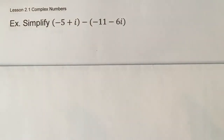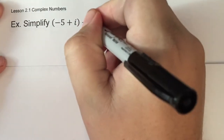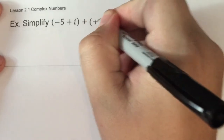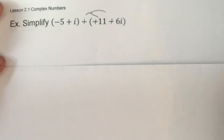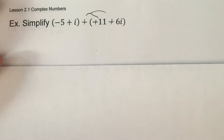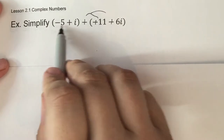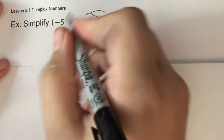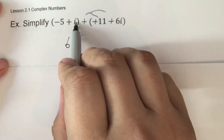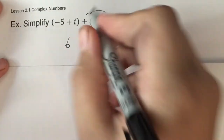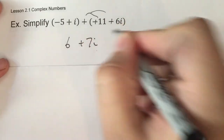If we subtract them, same idea — but first distribute the negative into both terms, so negative 5 and positive 11 give 6, and positive i and positive 6i give plus 7i.